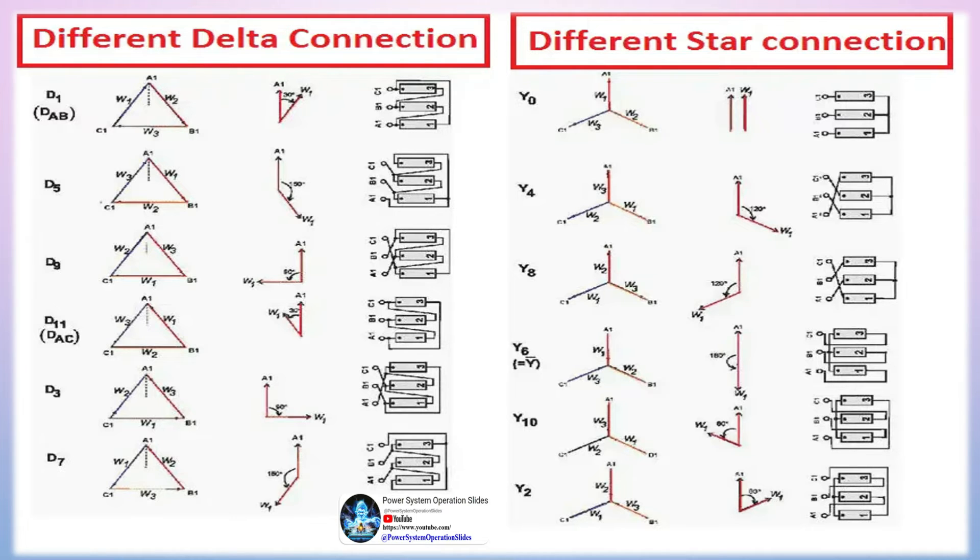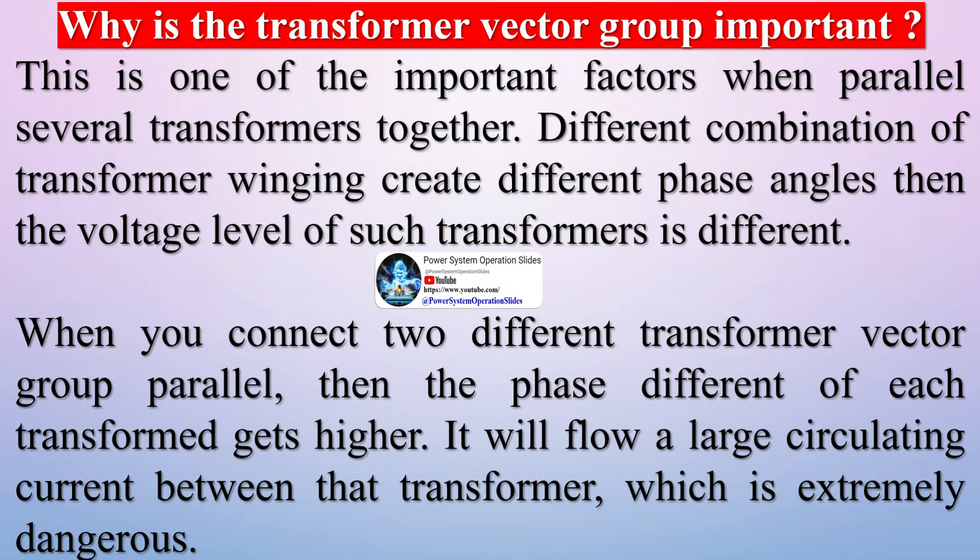Different combinations of winding connections will result in different phase angles between the voltages on the windings. Transformers connected in parallel must have the same vector group; mismatching phase angles will result in circulating current and other system disturbances.